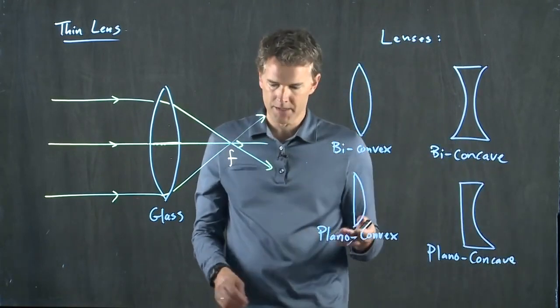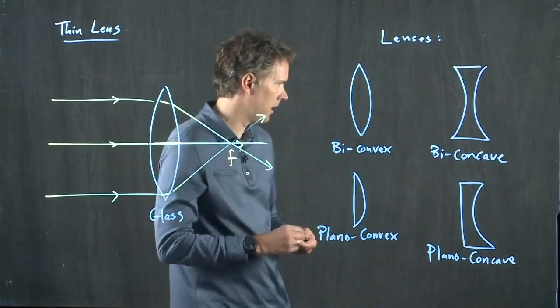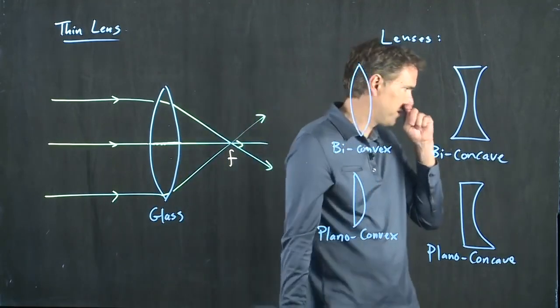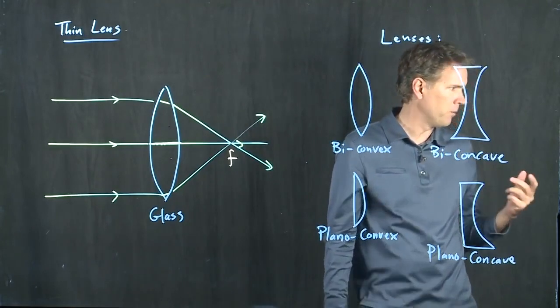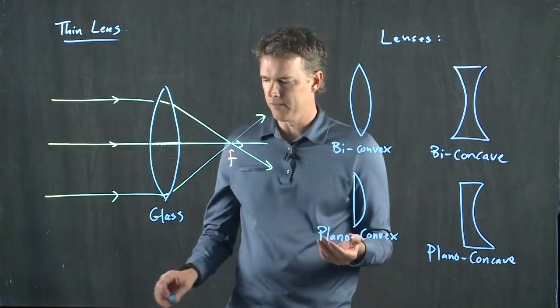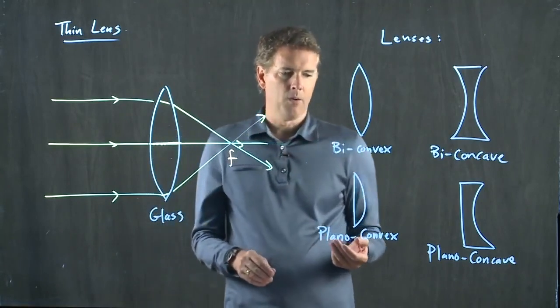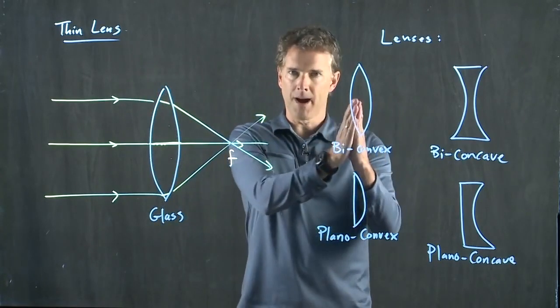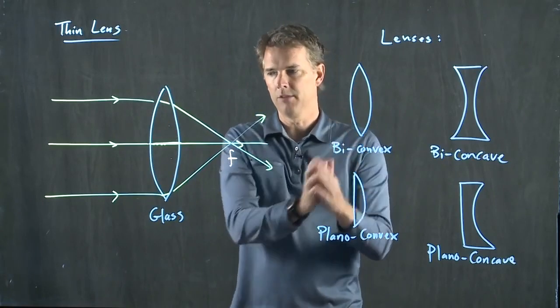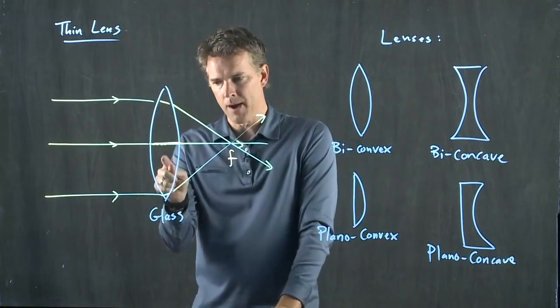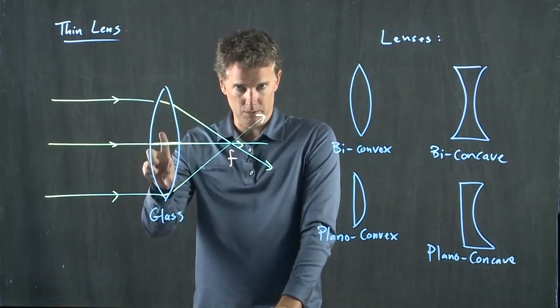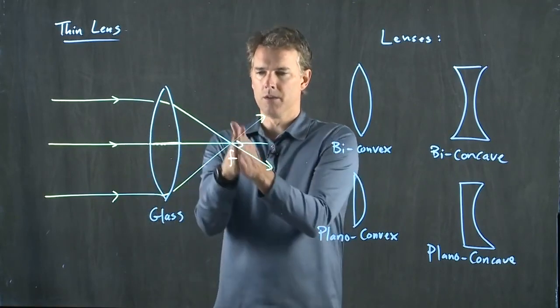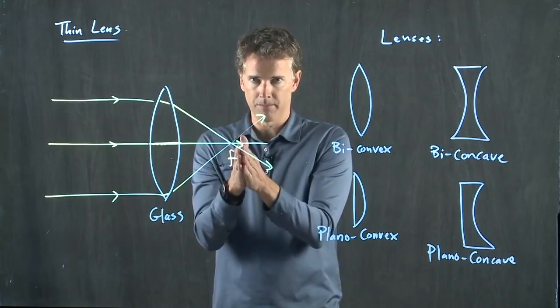And these are four of the typical lenses. There is a table in your book, figure 23-31, that talks about a few other kinds of lenses. Now, if it's a thin lens, then we are not worried about the thickness of the lens. We don't have to really worry about what's happening in the interim.